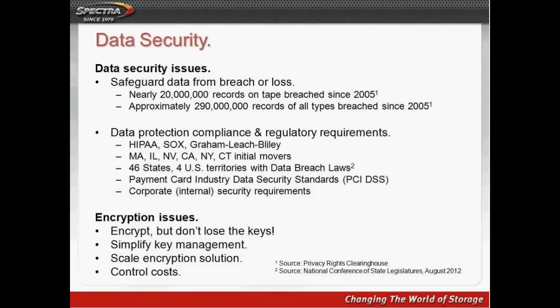Given the widespread exposure of data, there has been a tremendous amount of legislation and regulation written to help protect personal and biometric data. Federal legislation including HIPAA, Sarbanes-Oxley, and Gramm-Leach-Bliley came out early. A number of states also put privacy rights and data security legislation on their books, including Massachusetts, Illinois, Nevada, California, New York, and Connecticut among the initial movers. As of August this year, 46 different states and four US territories all have data breach laws on their books.